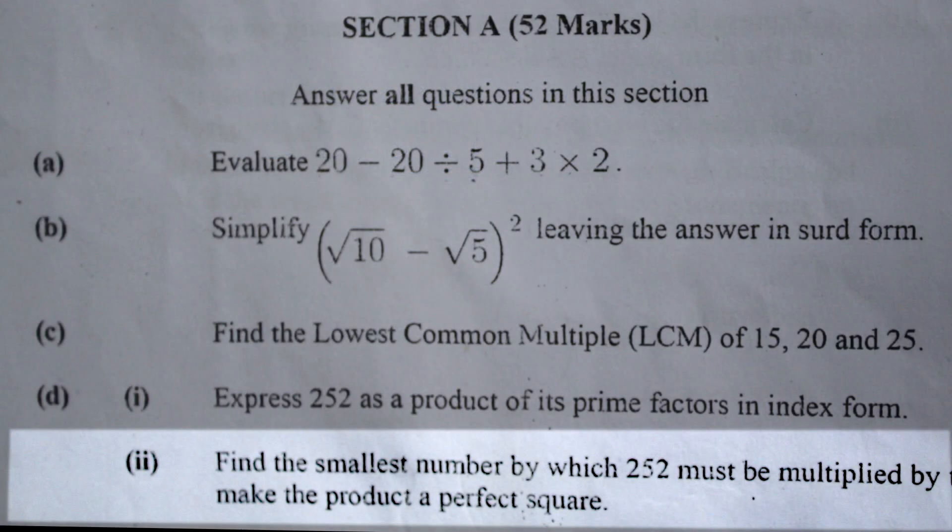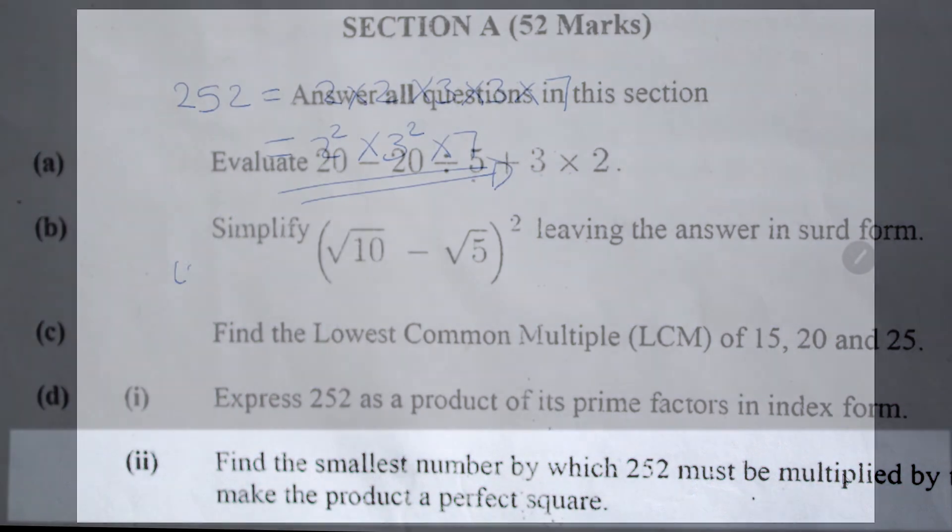For part 2, the number that we need to multiply 252 with in order to get a perfect square is 7.